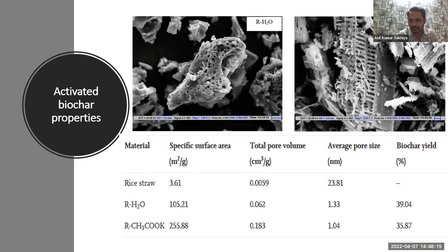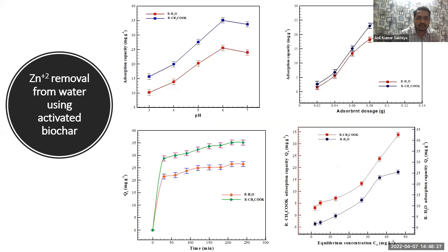From physical activation we obtained a surface area of 255 m²/kg, with a yield of 39% from steam activation and 35% from chemical activation. Thereafter we utilized the activated carbon for water purification for removal of heavy metal contamination.